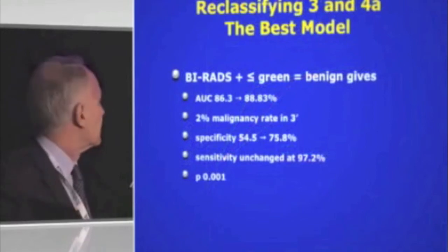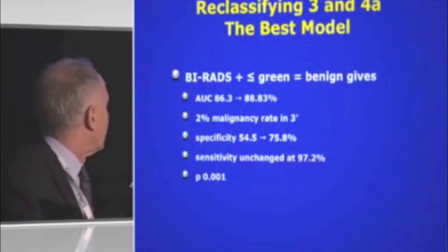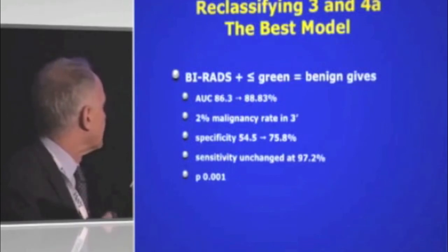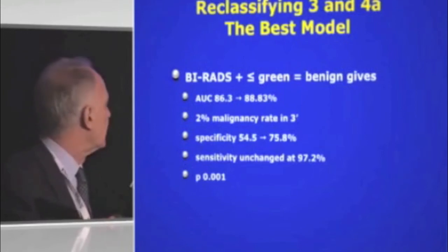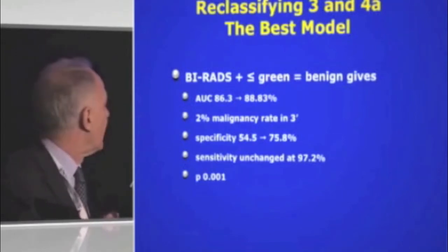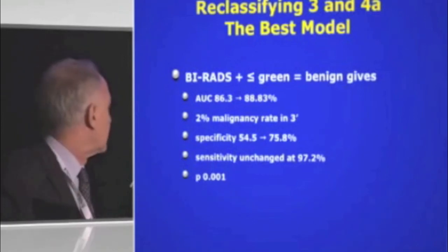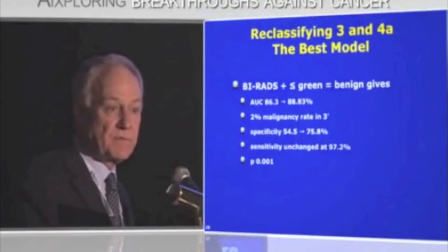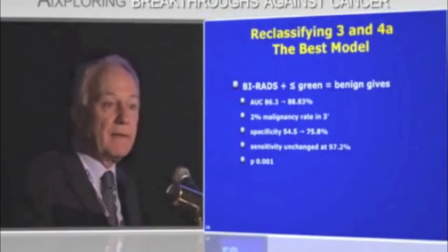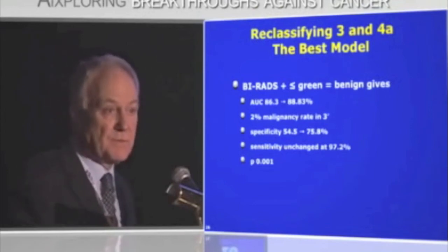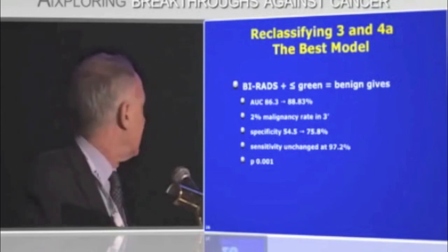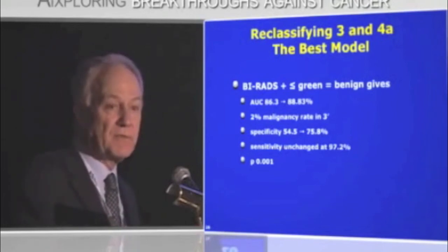The very best—the color green—changed the area under the curve from 86.3% to 88.8%. It kept the malignancy rate in the 3-prime group at 2%, and pushed specificity from 54.5% up to 75.8%, a really startling improvement, with no deterioration in the already very good sensitivity.